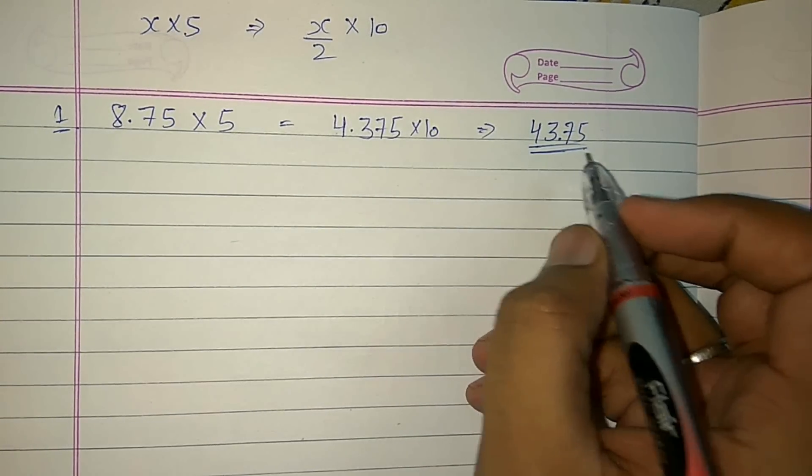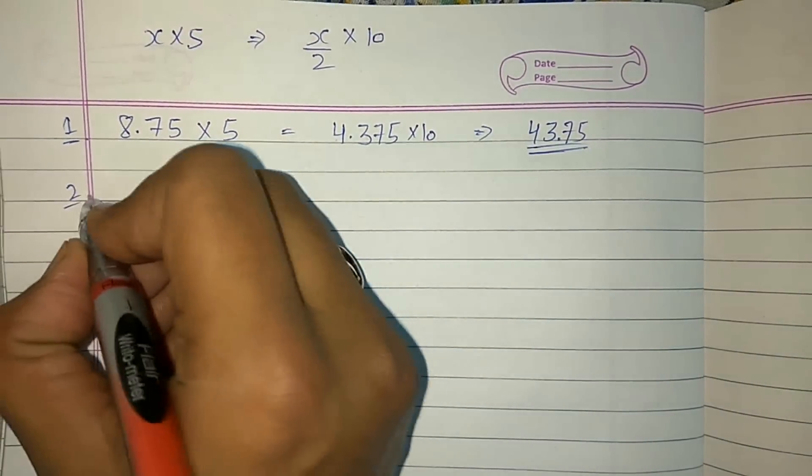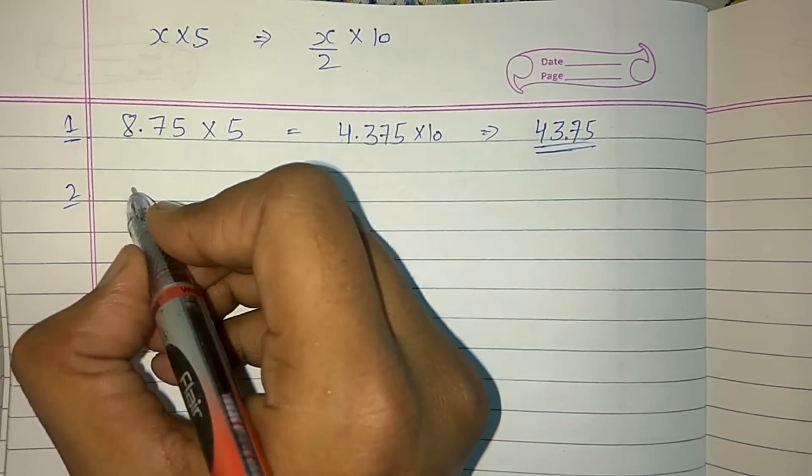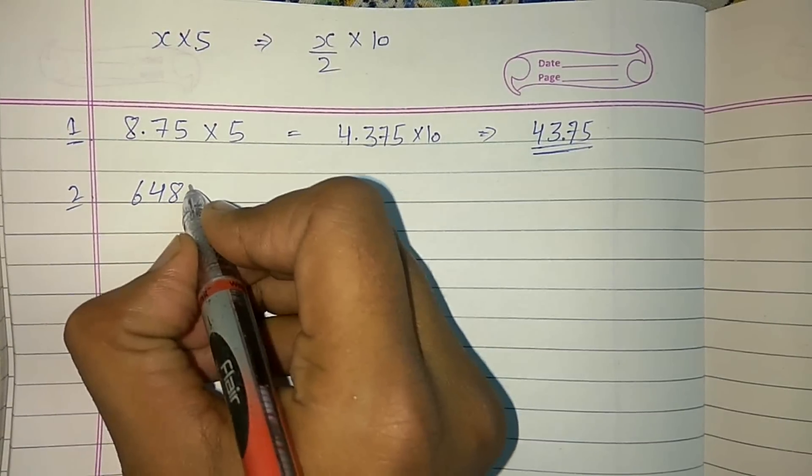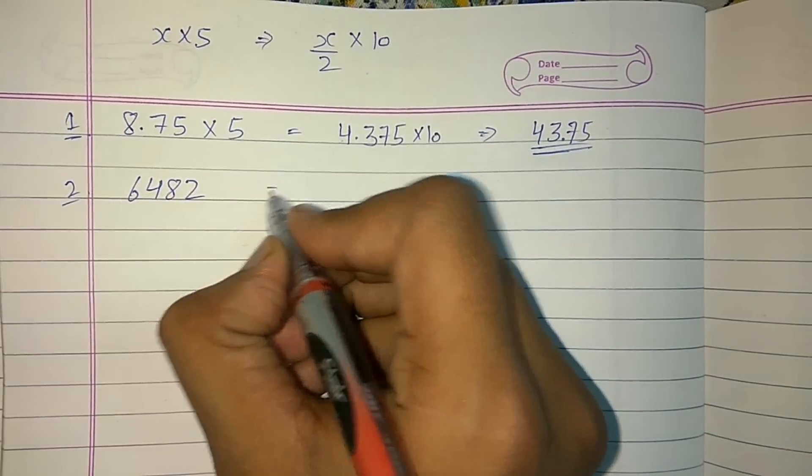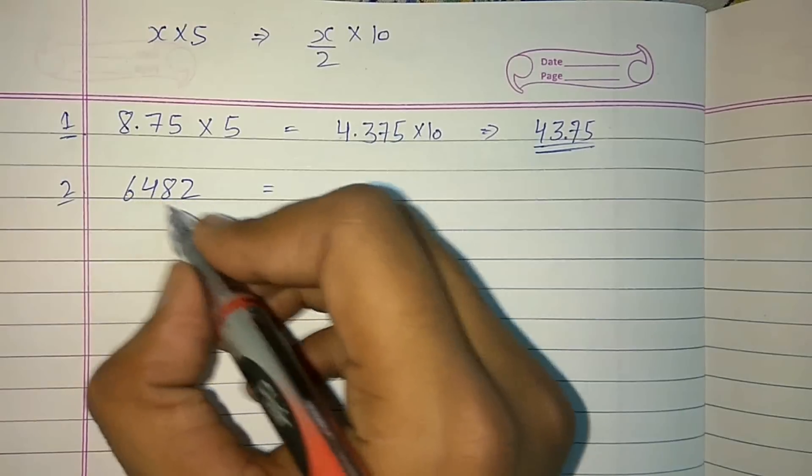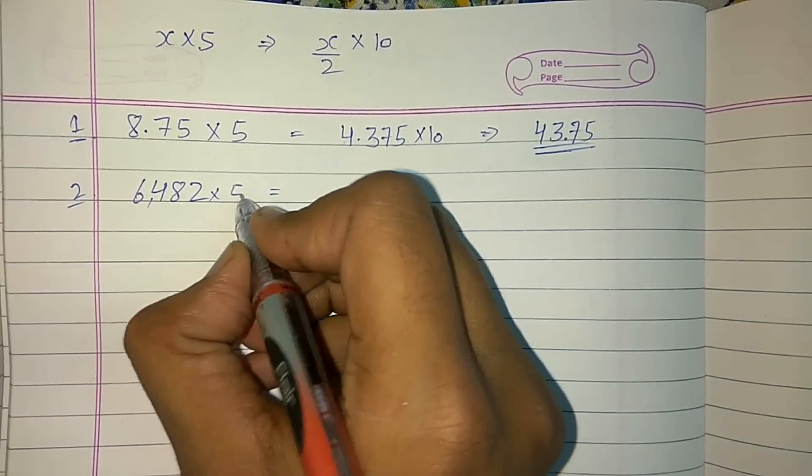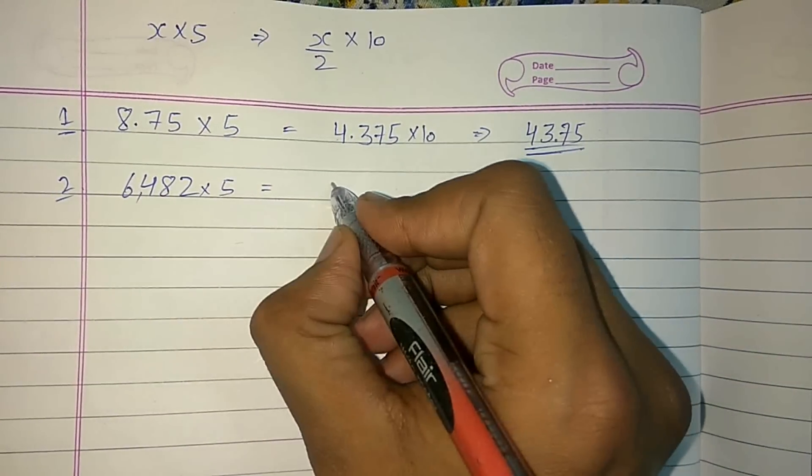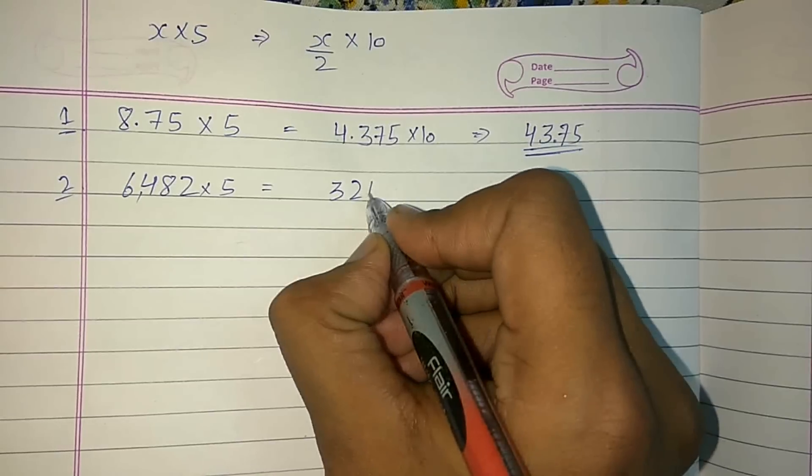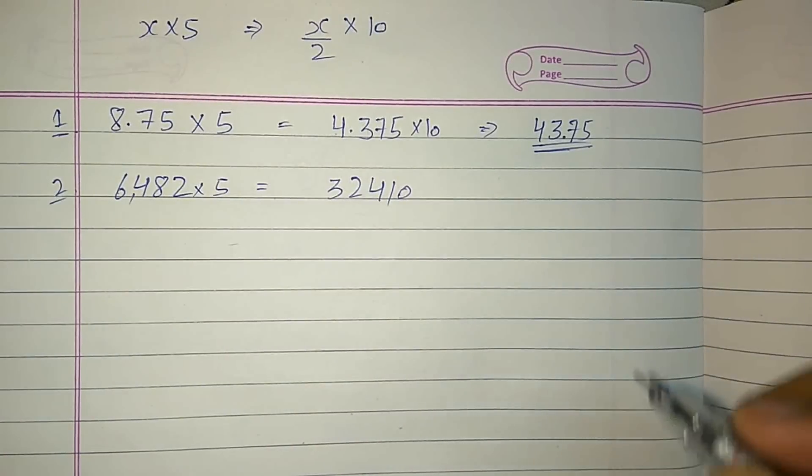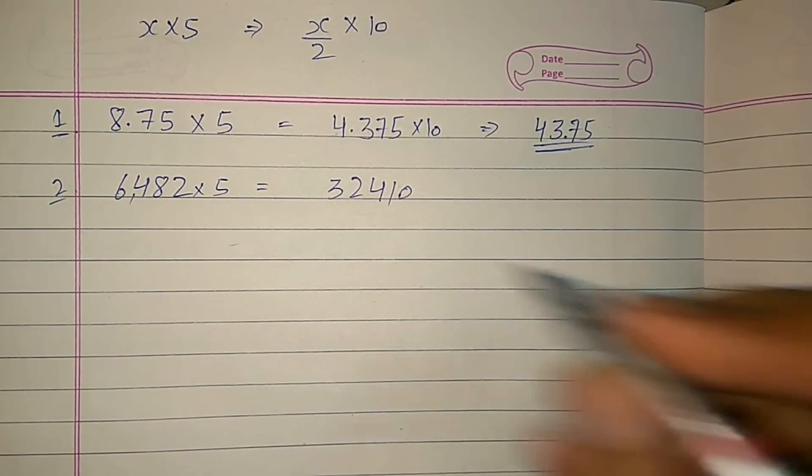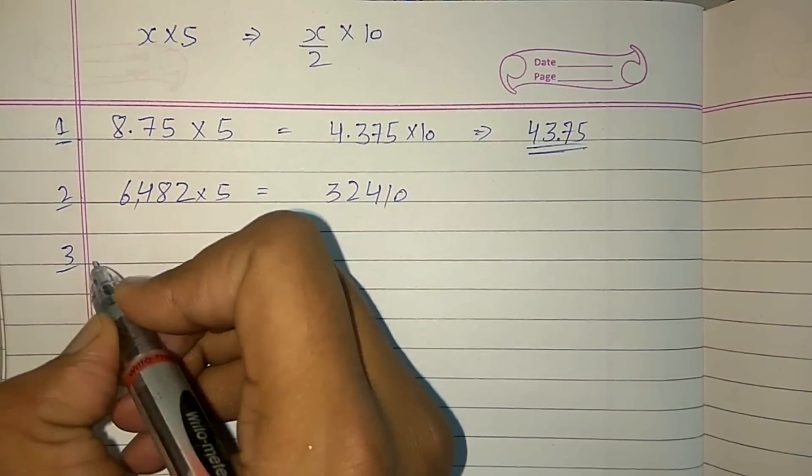Let's take a second example. We will take an even number this time: 6482. When you divide this number by 2, it will be 3241. When you multiply it by 10, it will add 0 at the end.